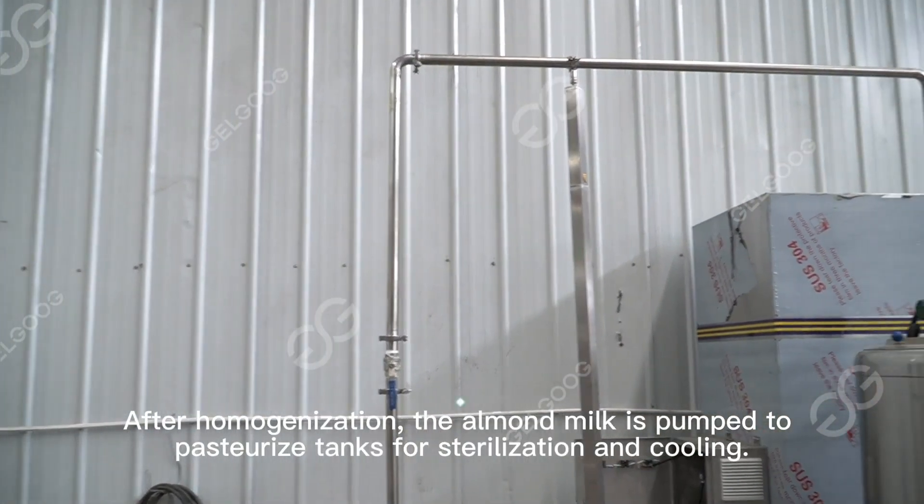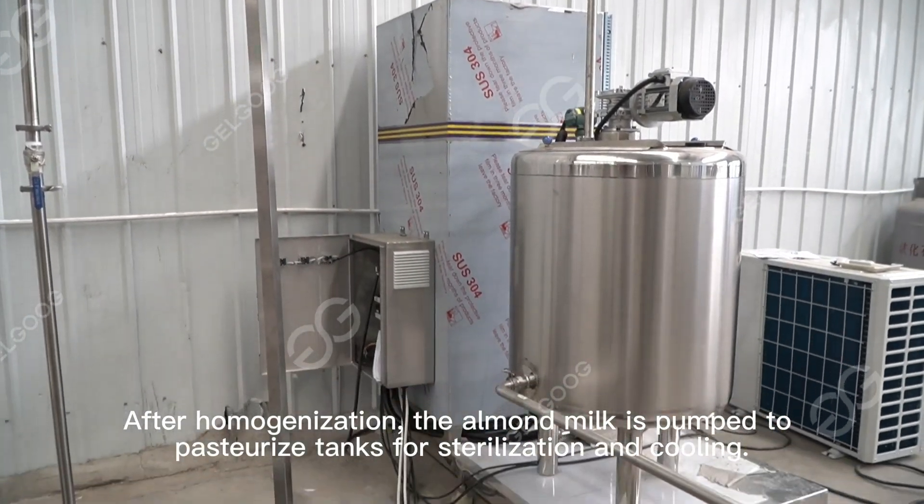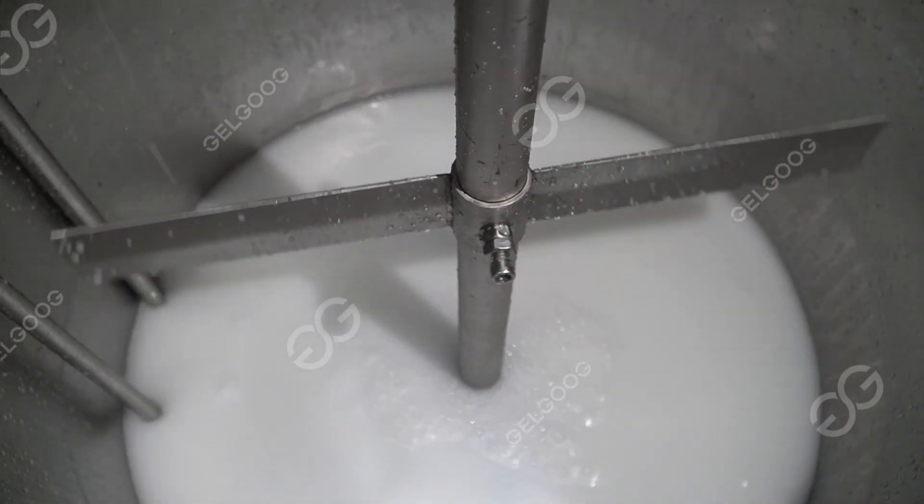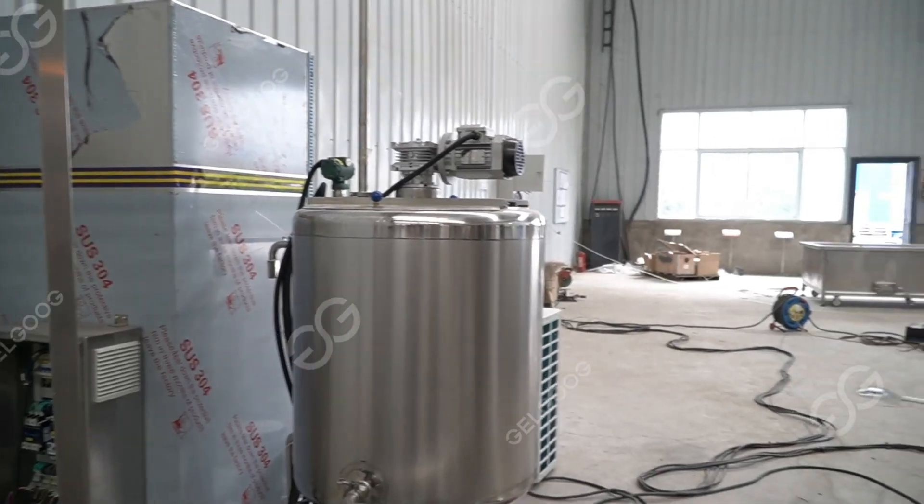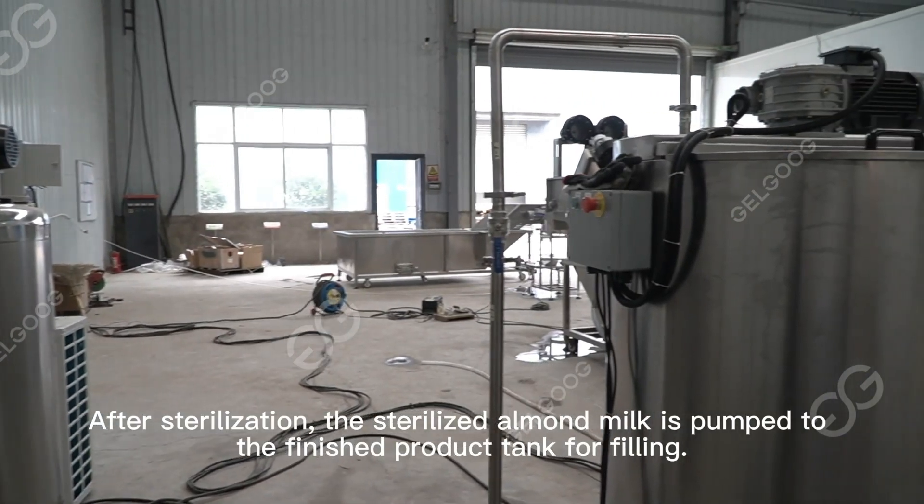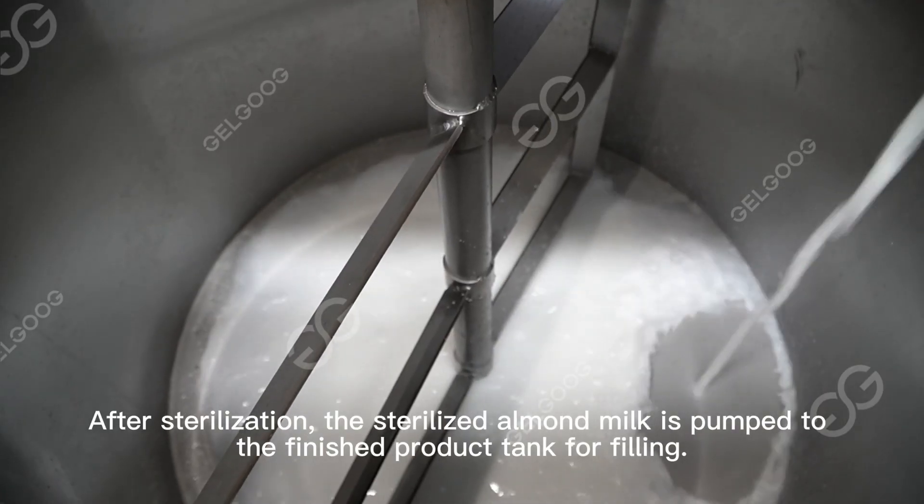After homogenization, the almond milk is pumped to pasteurization tanks for sterilization and cooling. After sterilization, the almond milk is pumped to the finished product tank for filling.